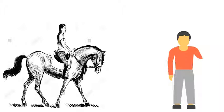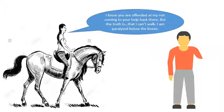Arjun was about to turn around and leave when Samaira said, I know you are offended at my not coming to your help back there, but the truth is that I can't walk. I am paralyzed below the knees.